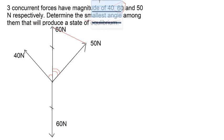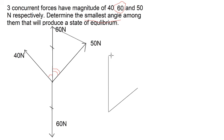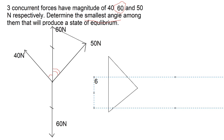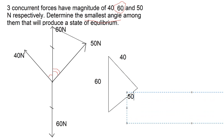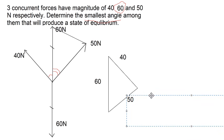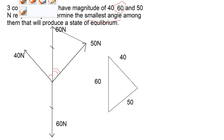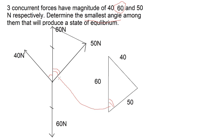Now we draw the triangle in here. So we have 60, we have 40, and we have 50. The angle we need to calculate is this one here, which is similar to this angle in here.